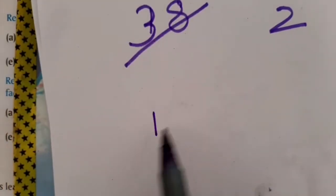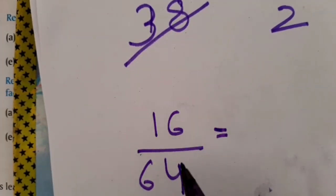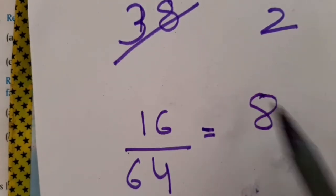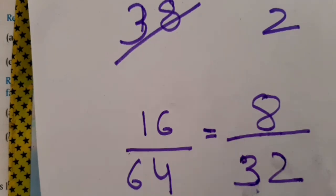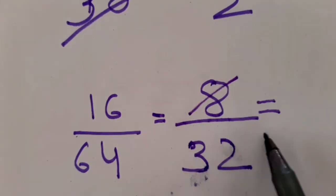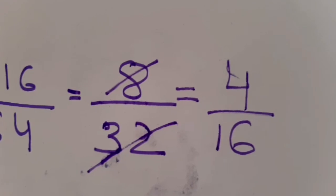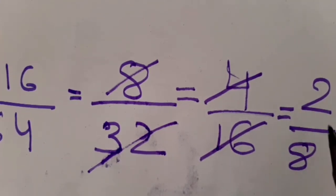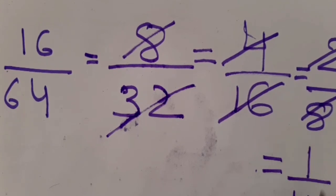Now come to the second part. The fraction is 16 upon 64. Here both the numbers are even numbers, which means a common factor is 2. So I will cancel both numbers by 2: 2 eights are 16 and 2 thirty-twos are 64. Again both numbers are even, so I will cancel by 2 again: 2 fours are 8 and 2 sixteens are 32. Again even, so cancel by 2: 2 twos are 4 and 2 eights are 16. Again even, so cancel by 2: 2 ones are 2 and 2 fours are 8. Now both numbers have become co-prime numbers.